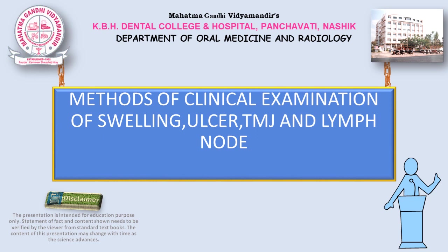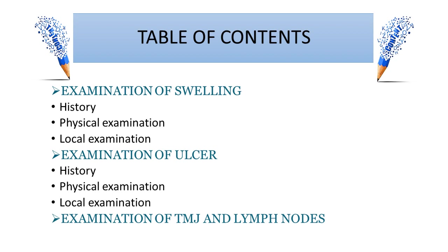Today's topic for lecture is the Method of Clinical Examination of Swelling, Ulcer, TMJ and Lymph node. We are going to study about the examination of swelling which includes the history, the physical examination and the local examination of the swelling. Then we will continue with the examination of ulcer, which also includes the history, physical examination and the local examination. The last part covers the examination of TMJ and lymph nodes.